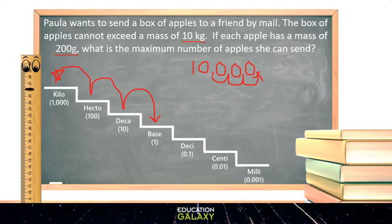Now, since each apple has a mass of 200 grams, I need to divide 10,000 divided by 200 and I get 50. So my answer is 50 apples.